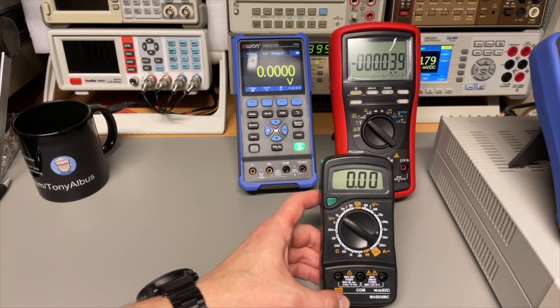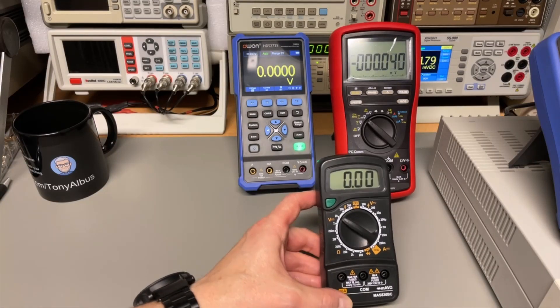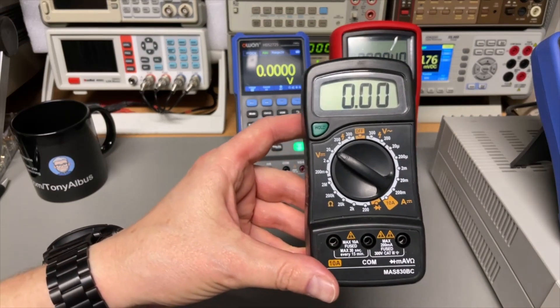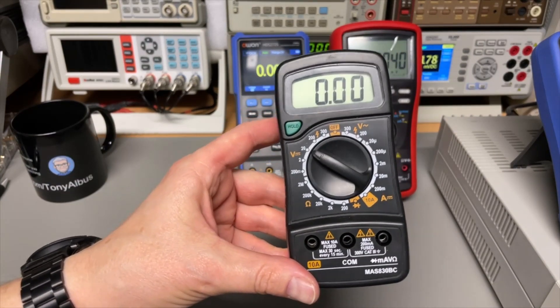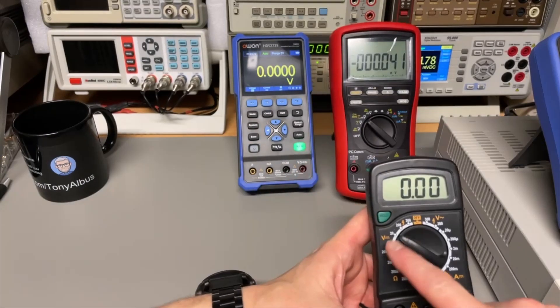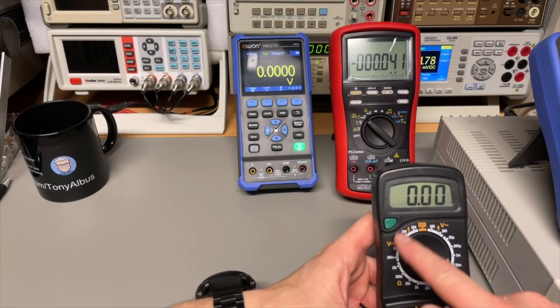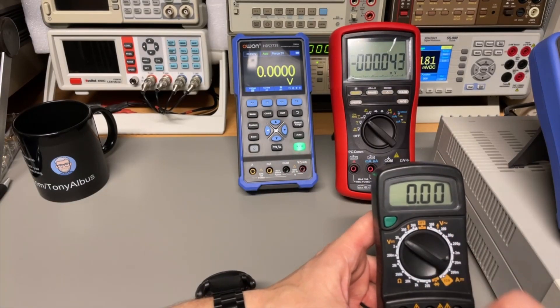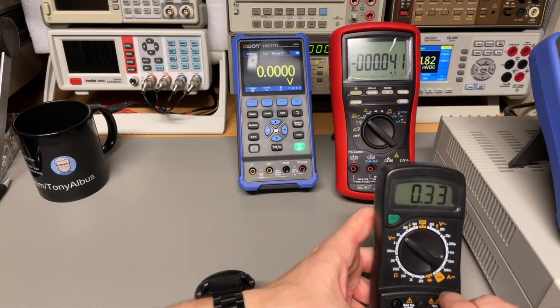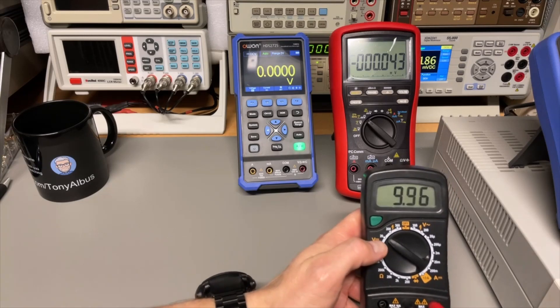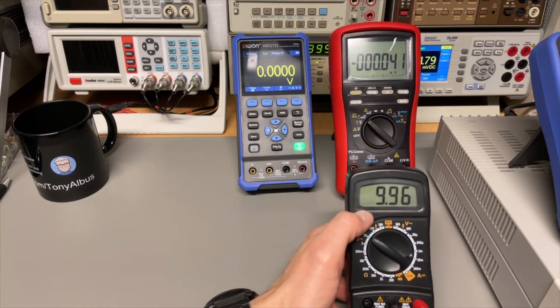Well, that was the older HP multimeter. Now, I have here just a very, very cheap, simple one. Not auto-scaling. And this one doesn't go by 10, but it goes by 2. This already starts to make a little bit more sense. Because if I, on the 20-volt scale, now we have three digits.